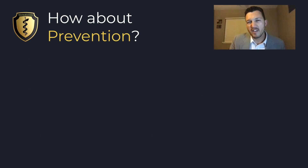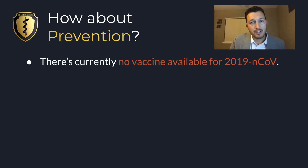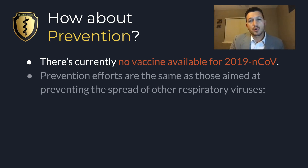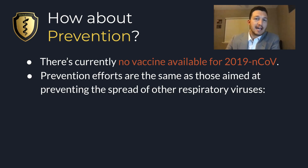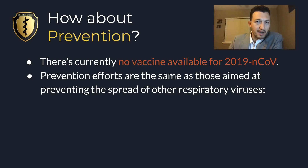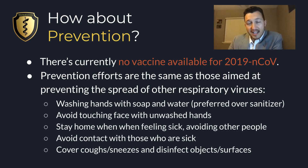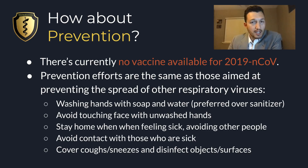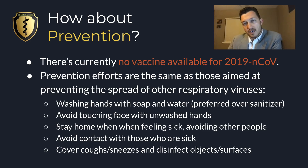What about prevention? Currently, there's no vaccine available for the novel coronavirus. Our prevention efforts should be aimed at the same efforts we would use to prevent other respiratory viruses: washing our hands with soap and water, avoiding touching our face with unwashed hands, staying home when sick and avoiding contact with others, avoiding contact with those who are sick, and covering sneezes and coughs and disinfecting objects or surface areas around us.